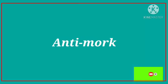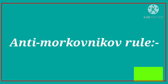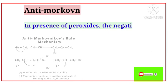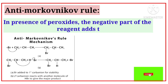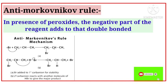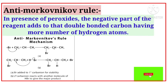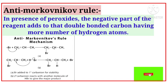Next is anti-Markovnikov rule. What is anti-Markovnikov rule? In the presence of peroxides, the negative part of the reagent adds to that double-bonded carbon having more number of hydrogen atoms. The word 'anti' means it is opposite to the Markovnikov rule.